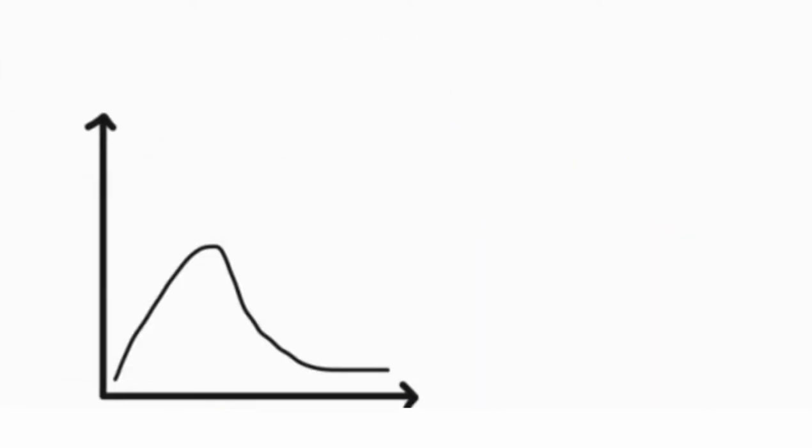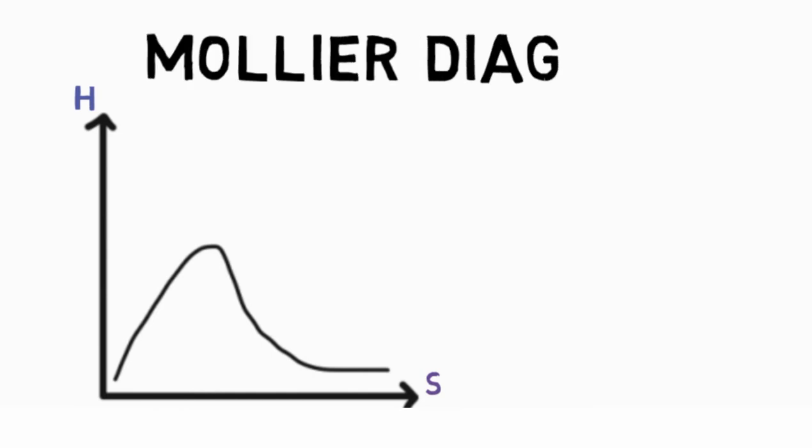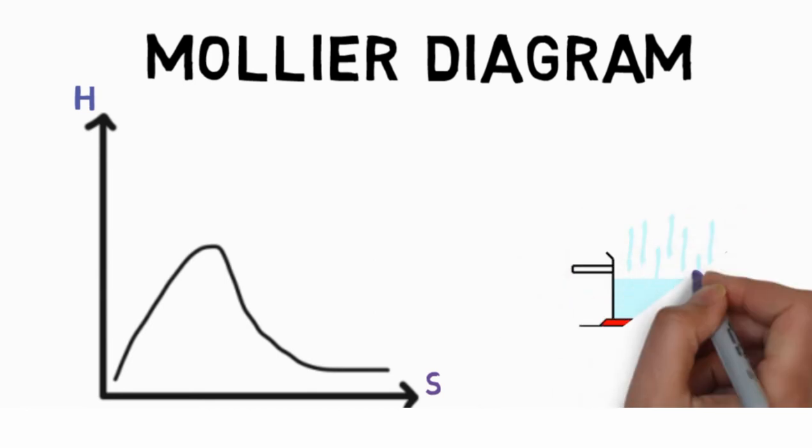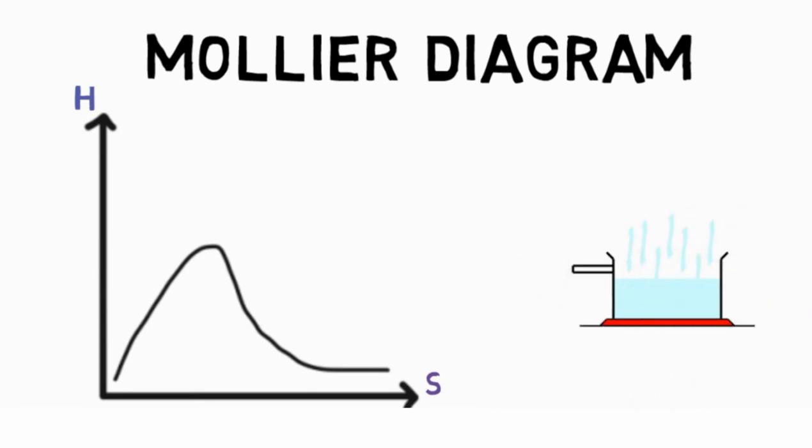An enthalpy-entropy chart, also known as the HS chart or more famously the Mollier diagram, plots the total heat against entropy, describing the enthalpy of a thermodynamic system, in this case a water steam mixture.